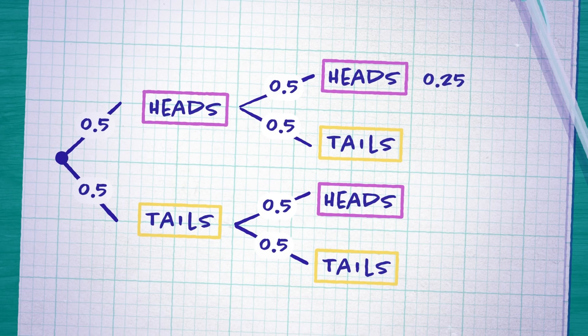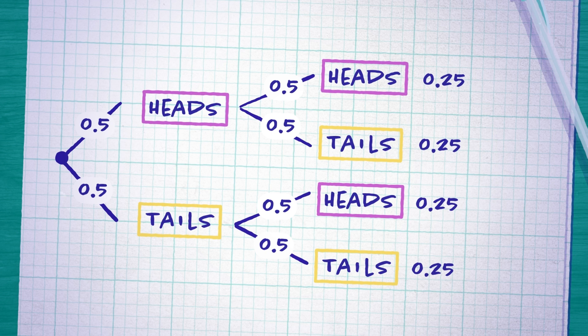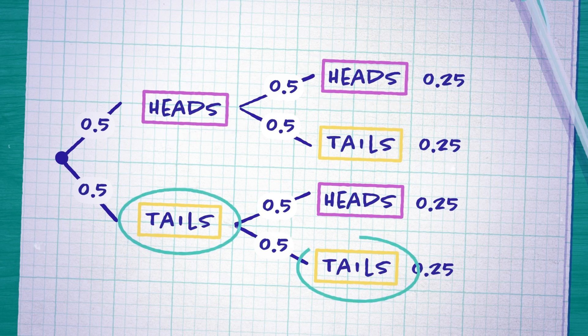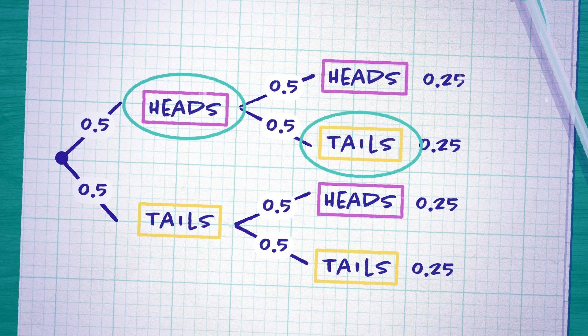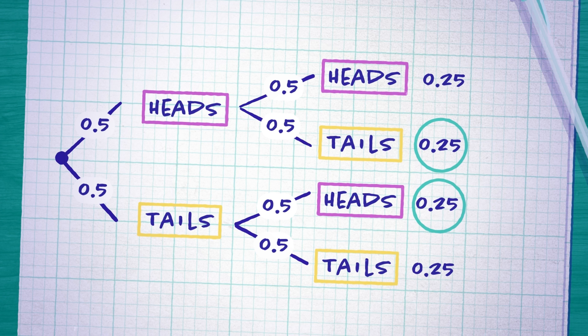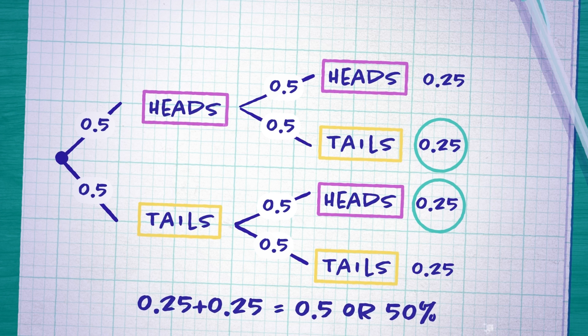Let's calculate the probability of each branch: 0.25, 0.25, 0.25, 0.25 — all of these options add up to 1. So there are four possible outcomes. The top option is two heads, the bottom option is two tails, and the middle two options are both one head and one tail — either head then tails or tails then heads. The probability of tossing two coins and ending up with one head and one tail means adding those middle two branches together: 0.25 plus 0.25 gives a probability of 0.5, or 50% — twice as much as getting two heads or two tails.